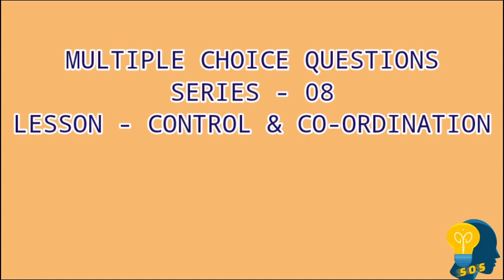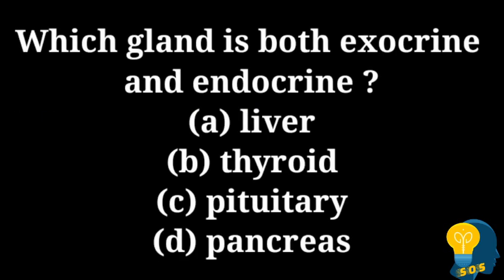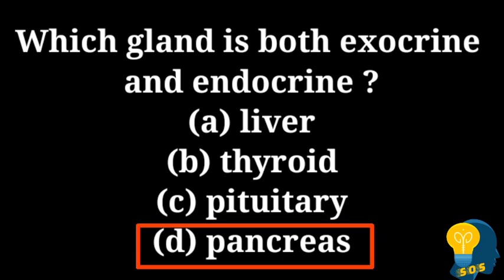The first question in this session is: which gland is both exocrine and endocrine? The options are option A: liver, option B: thyroid, option C: pituitary, and option D: pancreas. The correct answer is pancreas. As an exocrine gland, pancreas excretes enzymes to break down proteins, lipids, and carbohydrates in the food.